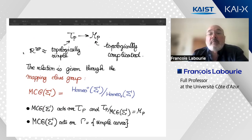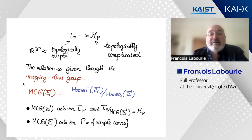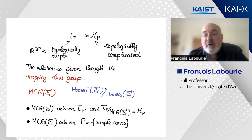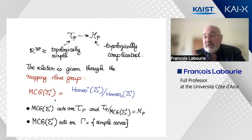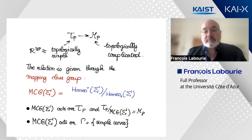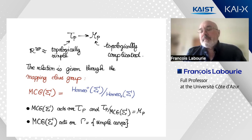You obtain a map from a topologically simple object — Teichmüller space — to the topologically complicated Riemann moduli space. The relation between these two objects is given by the mapping class group, which is the group of connected components of orientation-preserving homeomorphisms of σ. This mapping class group acts on the space of markings, and the quotient of Teichmüller space by the mapping class group is Riemann moduli space.